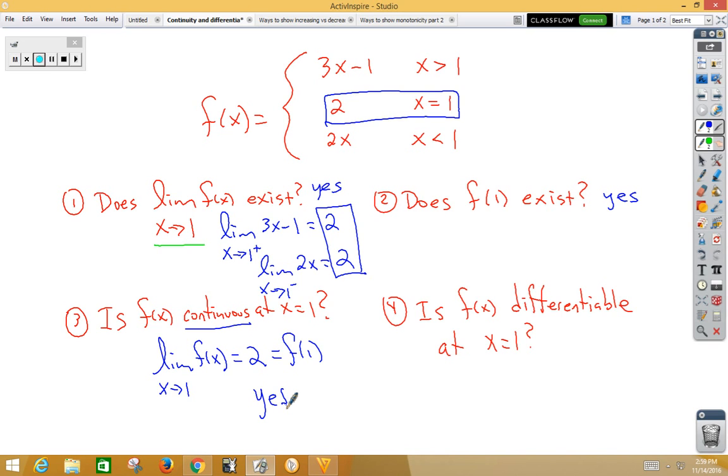Finally, in number 4, is f of x differentiable at x is equal to 1? For it to be differentiable, there needs to be two parts to it. Is it continuous? That answer was already provided in number 3 as yes. But then we need to look at sharp corners or cusps. The easiest way to tell that is to look at the slope since they're both lines.